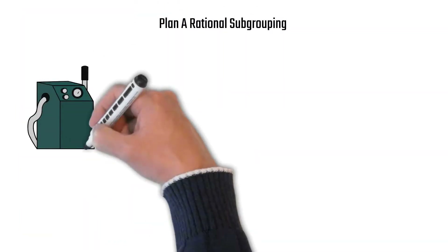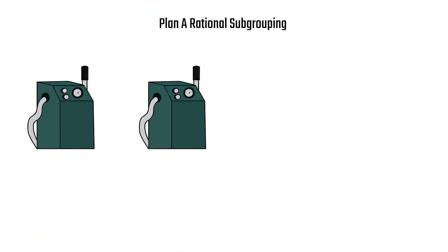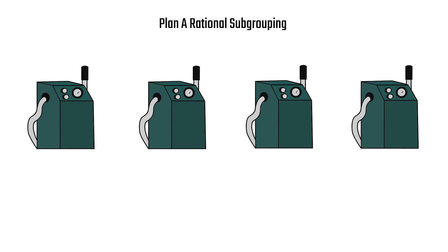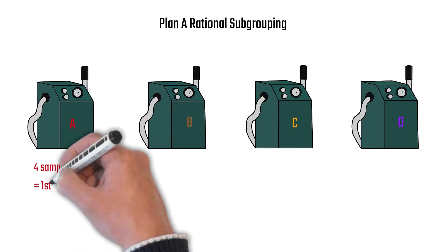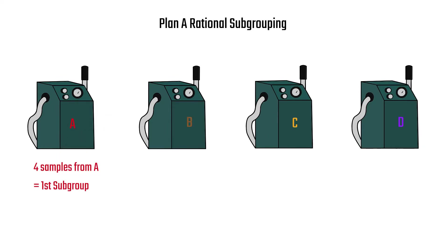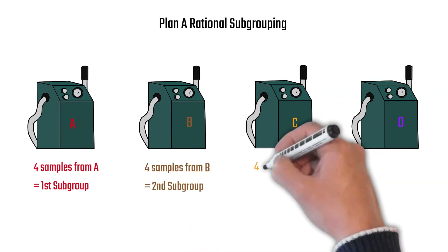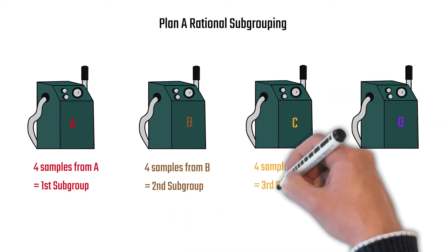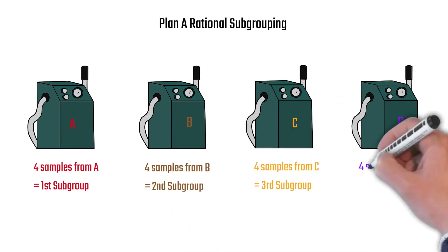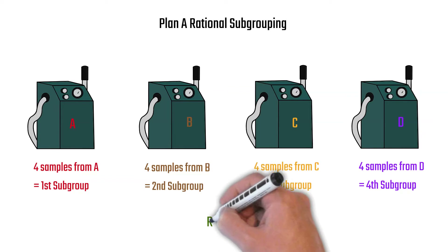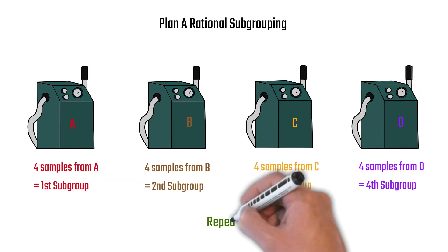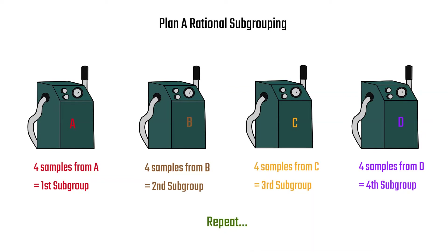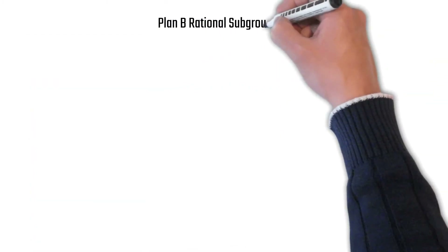Plan A rational subgrouping: we have four machines — A, B, C, and D. The first subgroup is formed by taking four samples from machine A. The second subgroup is four samples from B, and so on for C and D, then we repeat that process. So each subgroup is composed of samples from the same machine.